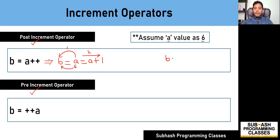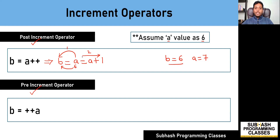Therefore the result is b = 6 and a = 7. To repeat: whenever you get b = a++, first take the existing value of a and store it into b — that is why we get b = 6. Then as the second step, increment the value of a, so a becomes 7.